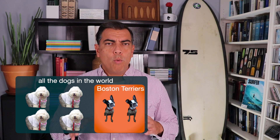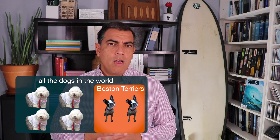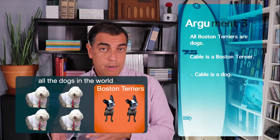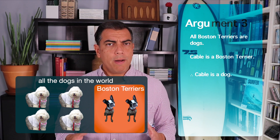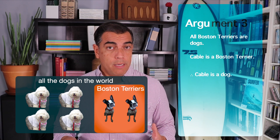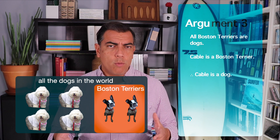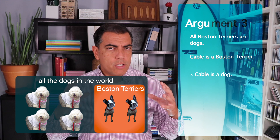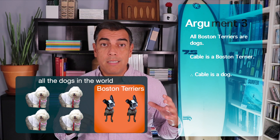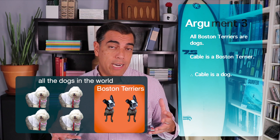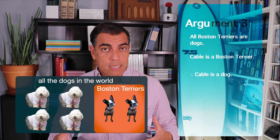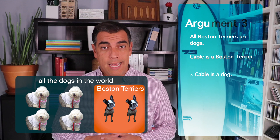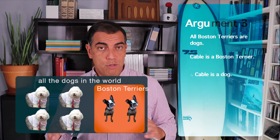It's that the premises being true guarantees the truth of your conclusion. What if we change the argument to: all Boston Terriers are dogs; Cable is a Boston Terrier; therefore Cable is a dog. Is this one NTP? Well, all of the Boston Terriers are inside the category of dogs, so anything in that category of Boston Terrier is also in the category of dog. These premises, assuming they're true, guarantee the truth of the conclusion. This is an NTP — a Necessary Truth Preserving argument.